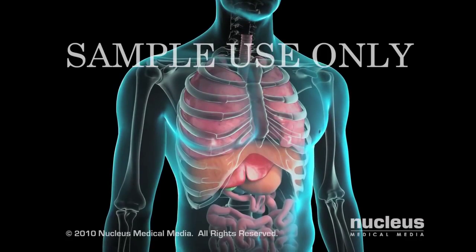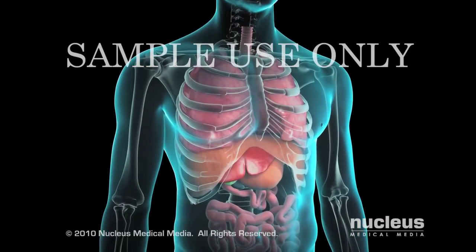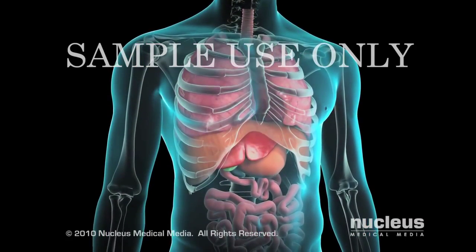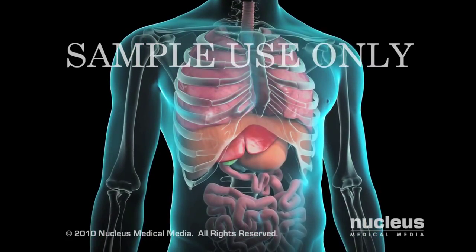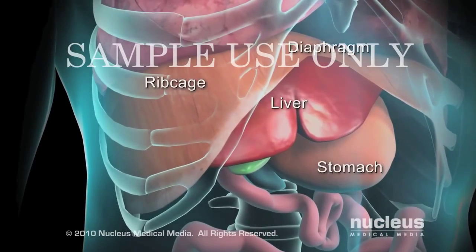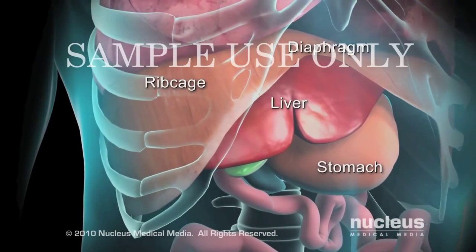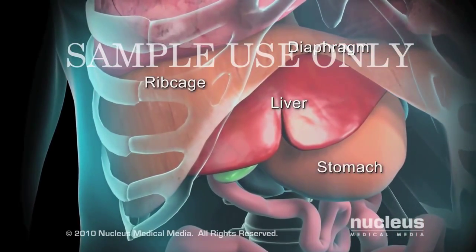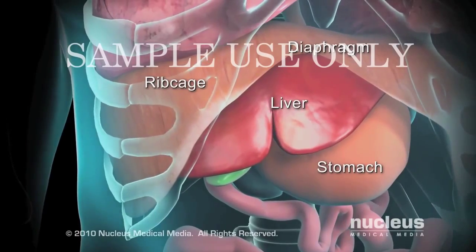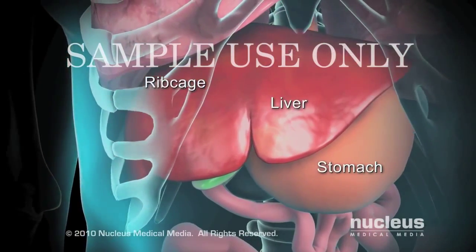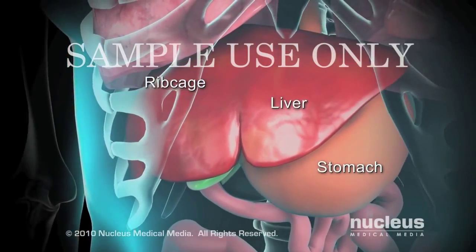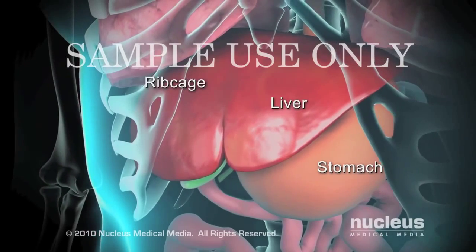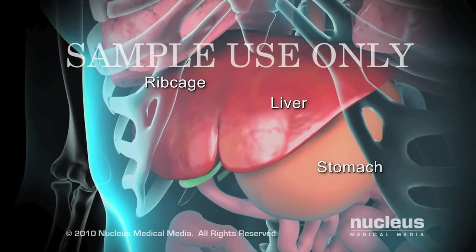Your doctor may obtain a liver biopsy to determine the cause of liver disease and the extent of the damage. The liver is located in the upper right abdomen, just under the diaphragm. It lies almost entirely within the ribcage, which provides some protection to the organ.